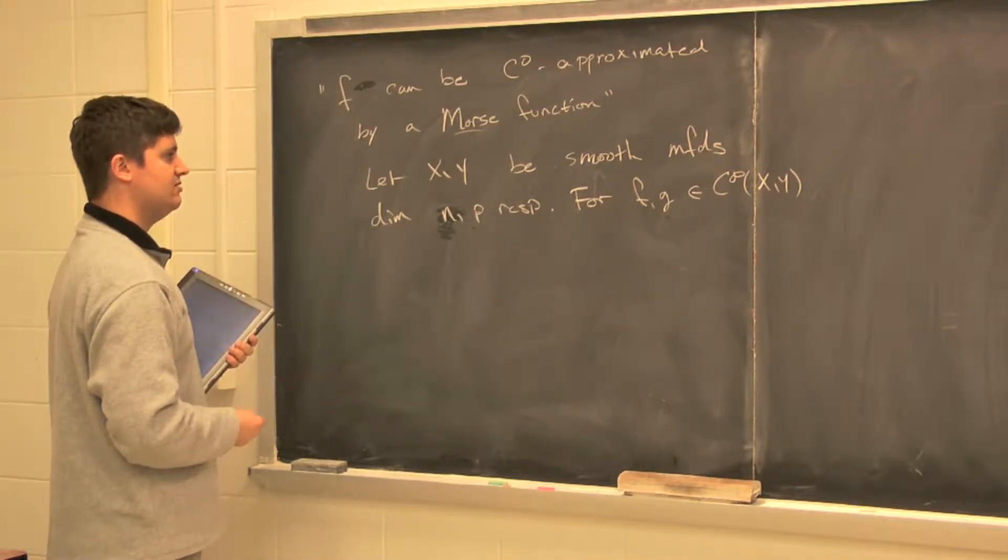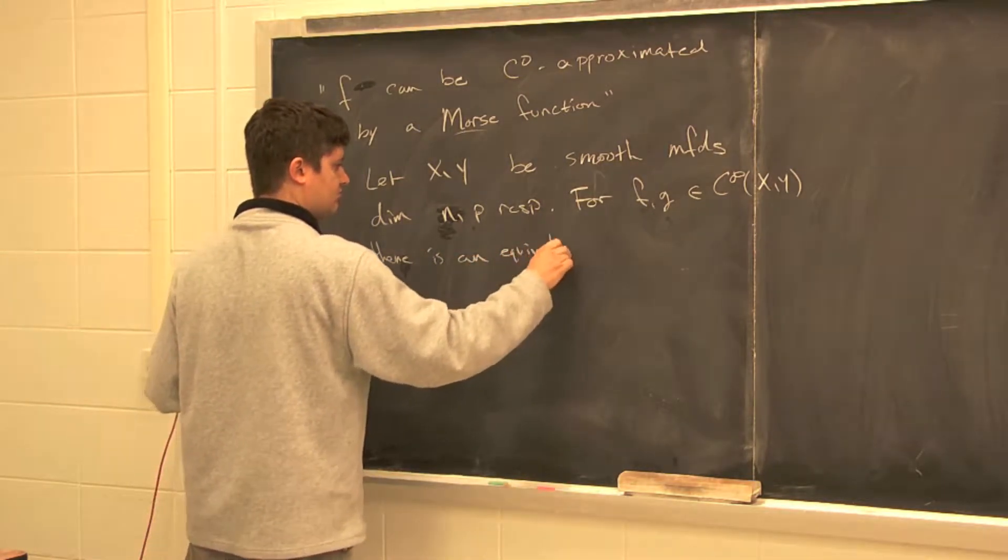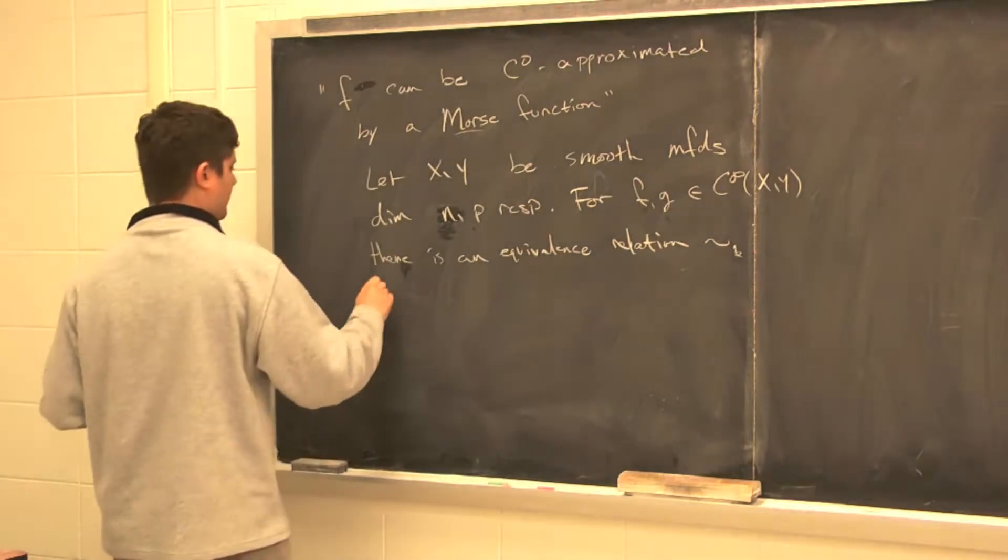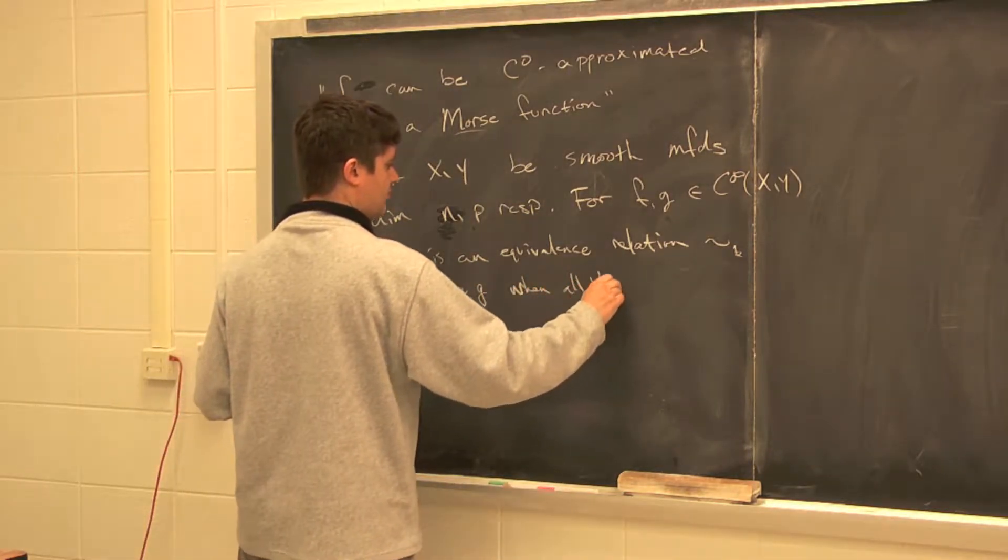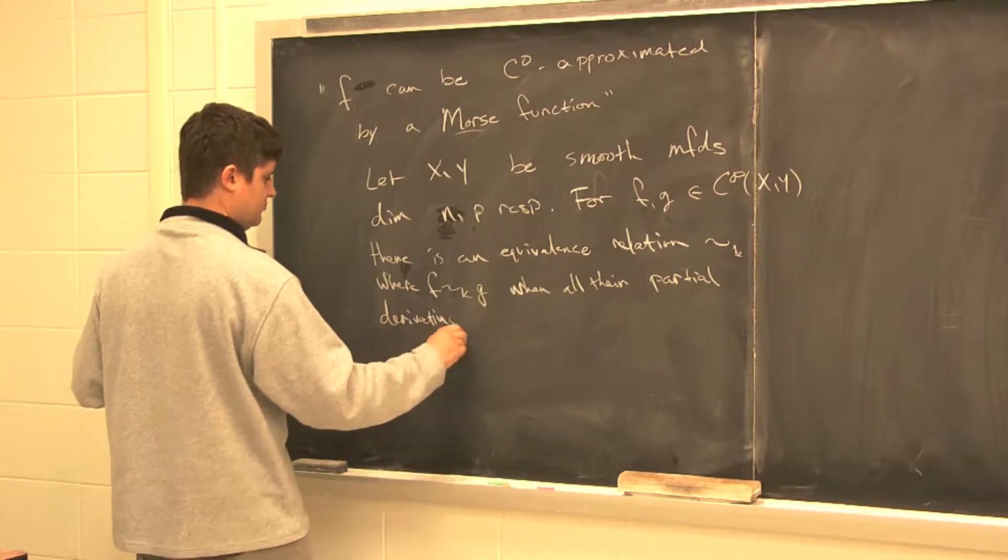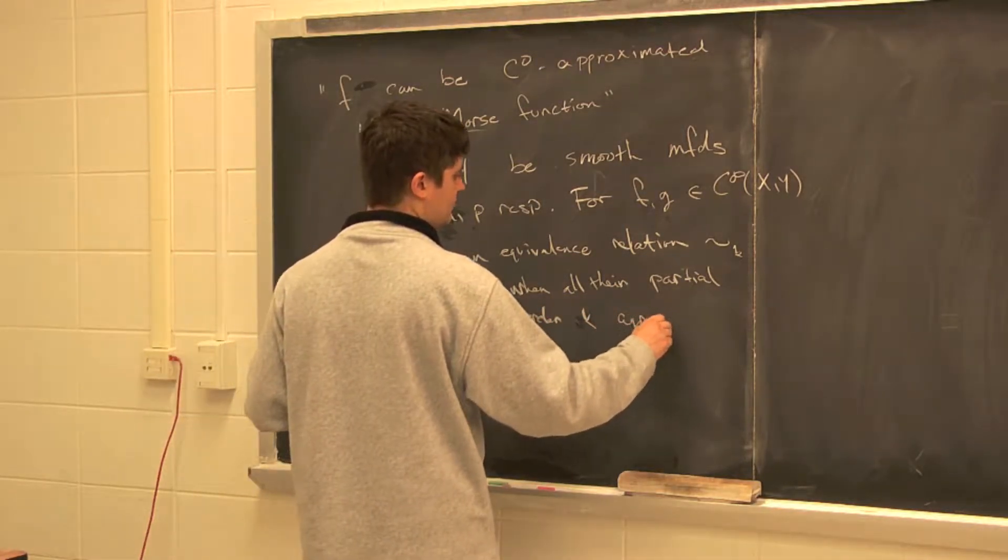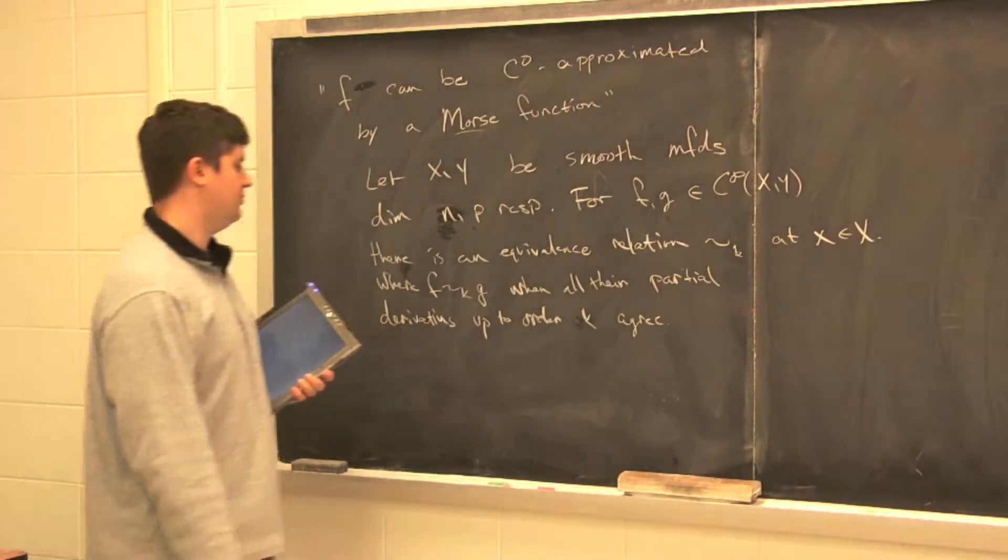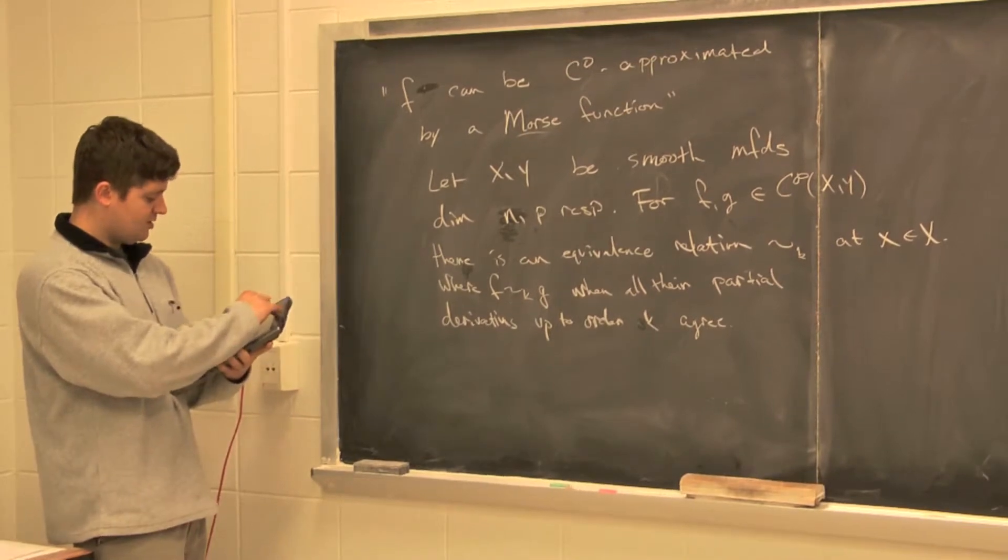For f and g in this class of maps, there is an equivalence relation, which I'm going to write as total k, where f is equivalent to g when all partial derivatives up to order k agree. This would be at a particular point, right? So f(x) has to equal g(x). That's the zeroth partial derivatives.